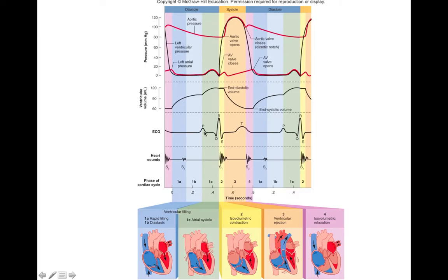Now after atrial depolarization, you have atrial repolarization. But because you have this giant QRS complex in the way, atrial repolarization is hidden — but it would occur somewhere in here. Atrial repolarization causes atrial diastole, so the atria relax at this point. After atrial repolarization, you have ventricular depolarization, and that is shown by this QRS complex right here. Depolarization causes systole, so with ventricular depolarization you see ventricular systole.